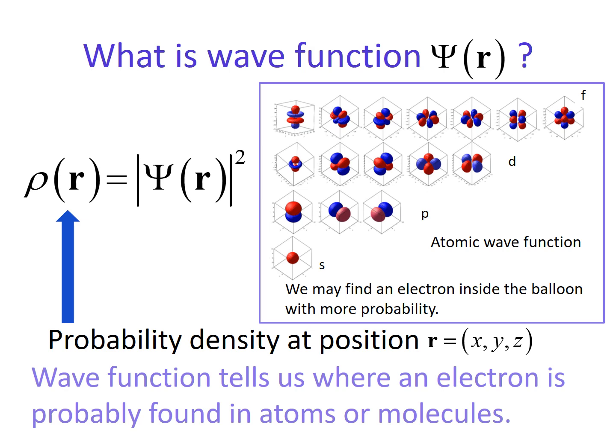Then what is the wave function psi r? Actually, the square of the absolute value of wave function corresponds to the probability density at the position r. In quantum mechanics, we cannot specify the exact position of the electron at a certain moment. But we can only say where the electron probably stays. It is very different from classical mechanics.